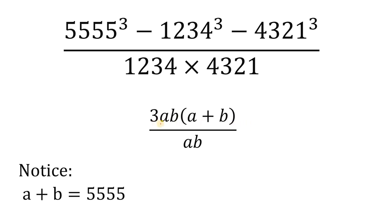Again, we can cancel ab on the numerator and denominator. This simplifies to 3(a+b).